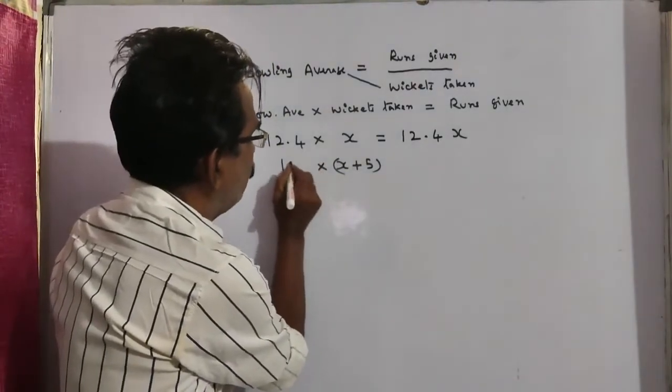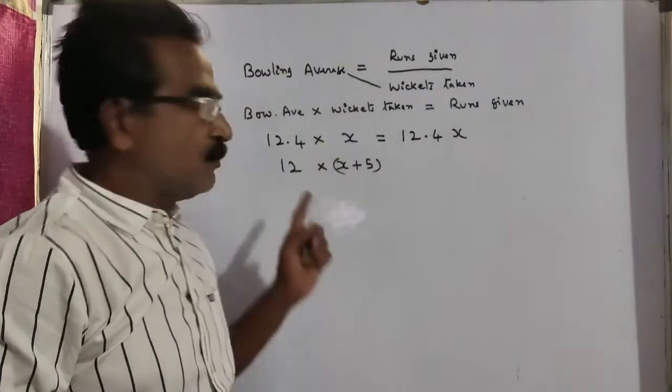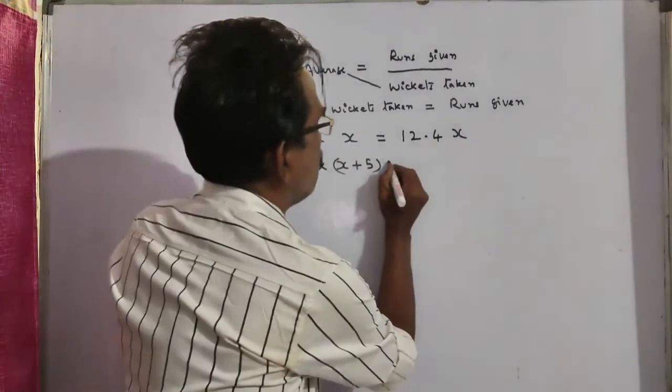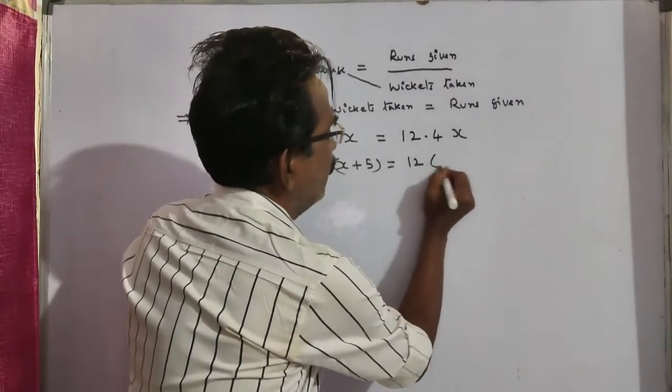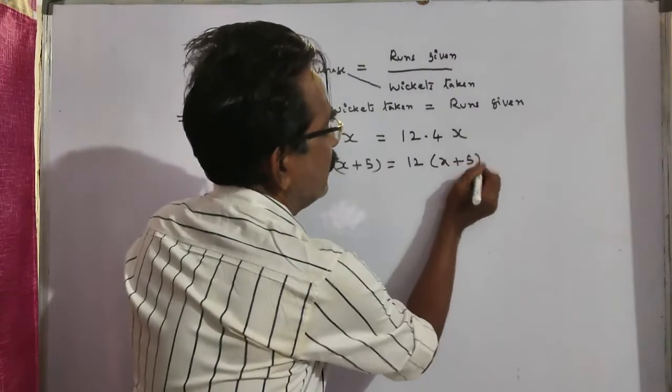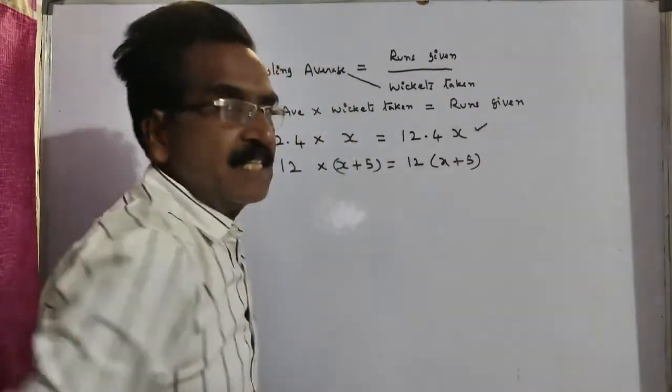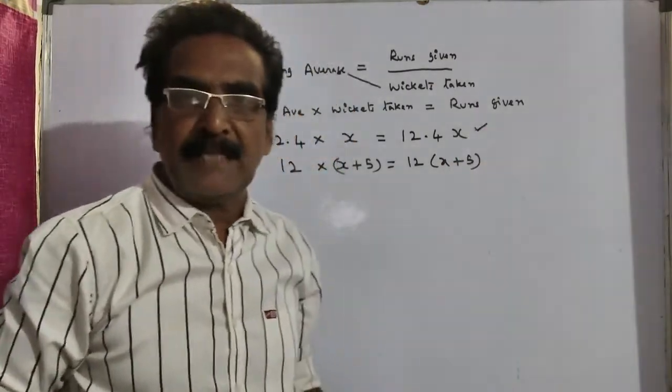And, his average is decreased by 0.4. So, 12.4 minus 0.4. His average is, bowling average is 12.4. This into this is equal to total number of runs. So, this is the total number of runs given up to the previous match, last match.